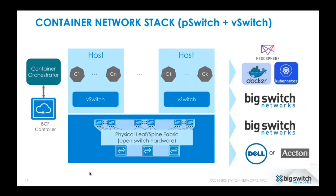In this slide, I'll highlight how the container networking stack looks in the solution we provide from Big Switch. From the physical aspect, we have leaf and spine switches — white box or bright box switches provided by either Dell or Accton — and we have the BCF controllers that program the whole SDN fabric. We have bare metal hosts on which a virtual switch runs, provided by Big Switch Networks as well, also programmed by our SDN controller. For the container point of view, we support all orchestrators like Docker, Kubernetes, or Marathon from Mesosphere. We have an agent running on the container orchestrator masters and plugins running on the bare metal hosts themselves.